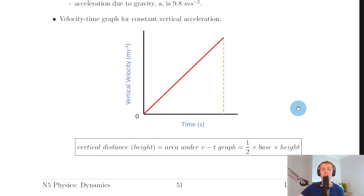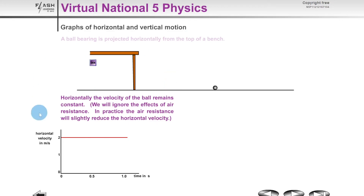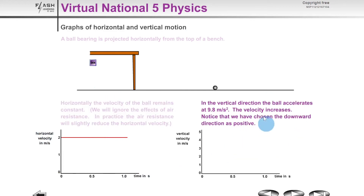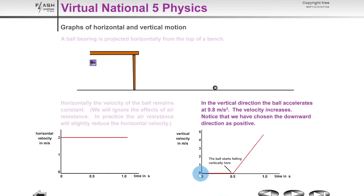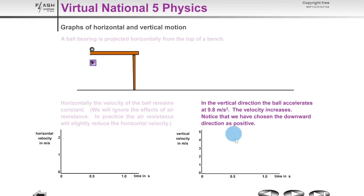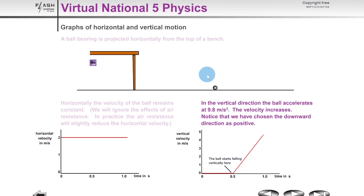Going back to the simulation: we saw the horizontal velocity against time graph had a straight horizontal line at two metres per second. Looking at the vertical velocity against time graph, replaying the motion we get a straight horizontal line at zero metres per second until about 0.5 seconds, then a positively sloping diagonal line — uniform or constant acceleration. The initial vertical velocity is zero metres per second, and after 0.5 seconds the ball has left the table and is travelling with both vertical and horizontal motion.